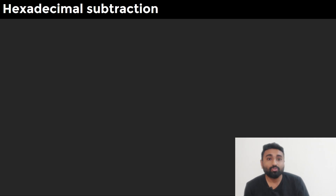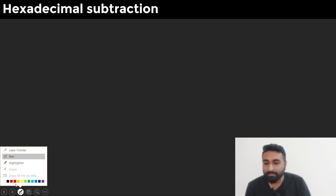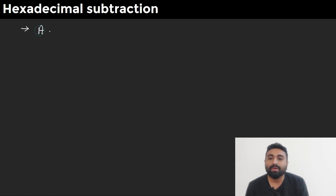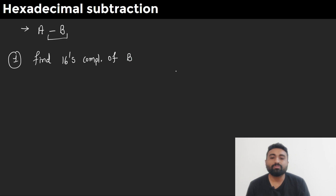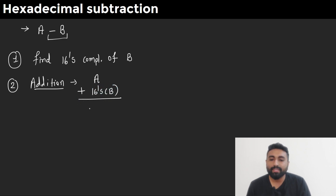Let's start this video. First, we need to understand how to do hexadecimal subtraction. For example, let's say you want to perform the hexadecimal subtraction A minus B. In the first step, you need to find the 16's complement of the negative number — in our case, B. So you will find the 16's complement of B. In the second step, you will perform addition between A and the 16's complement of B.